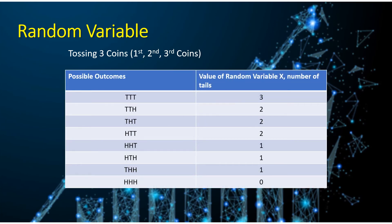This time, we're going to construct a table. This table has two columns wherein the first column shows the possible outcomes from the previous slide. The second column will be the value of our random variable X, the number of tails. As you can see, in our first possible outcome we have tail, tail, tail. Since we are concerned with the number of tails for each possible outcome, the value for this first outcome would be 3, because there are 3 tails. For our last possible outcome, which is a combination of three heads, there are no tails present, so the value is 0.